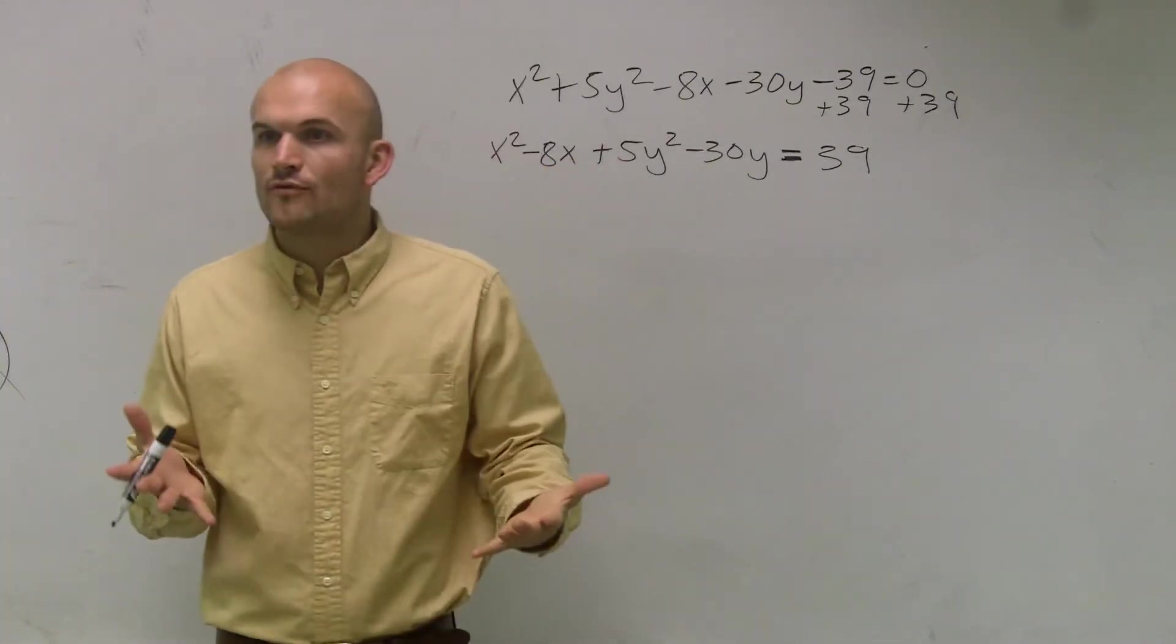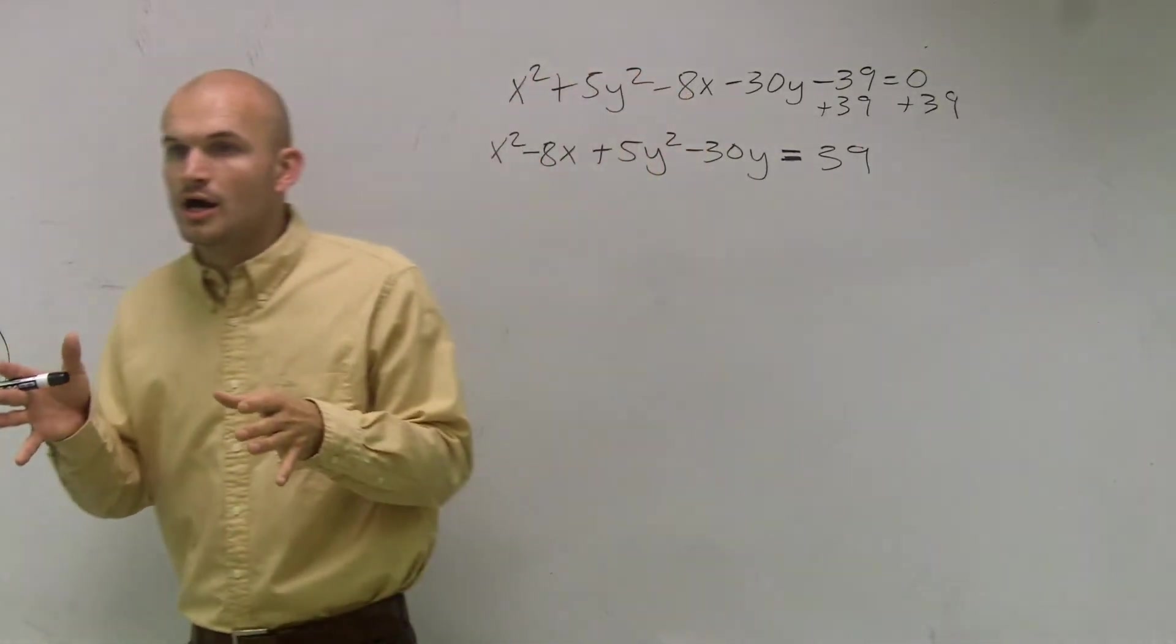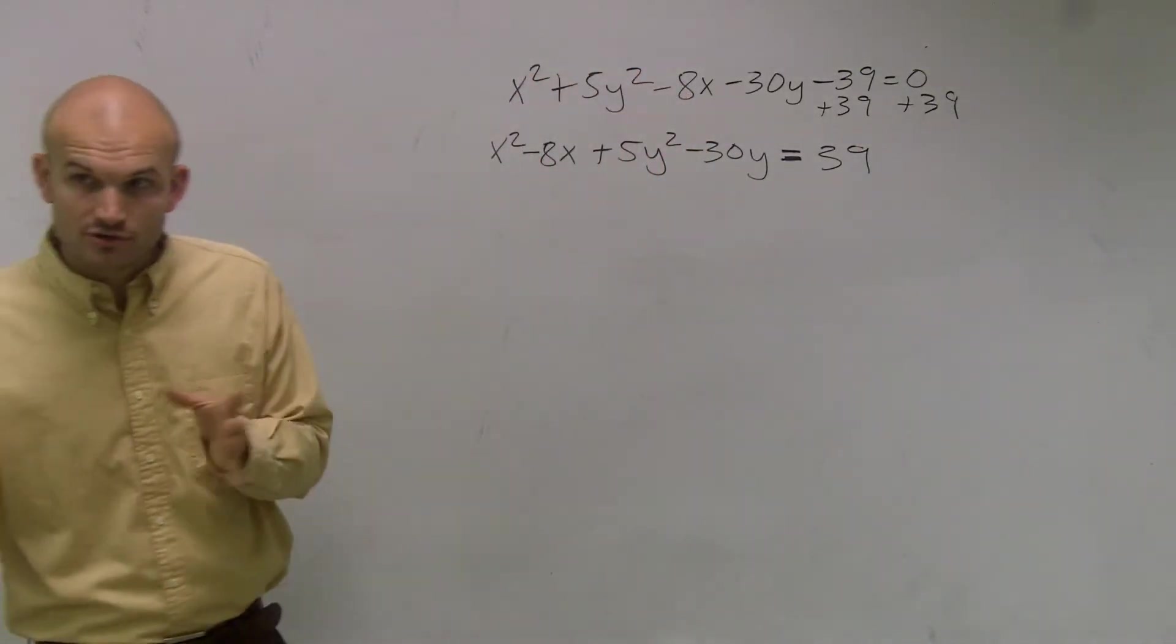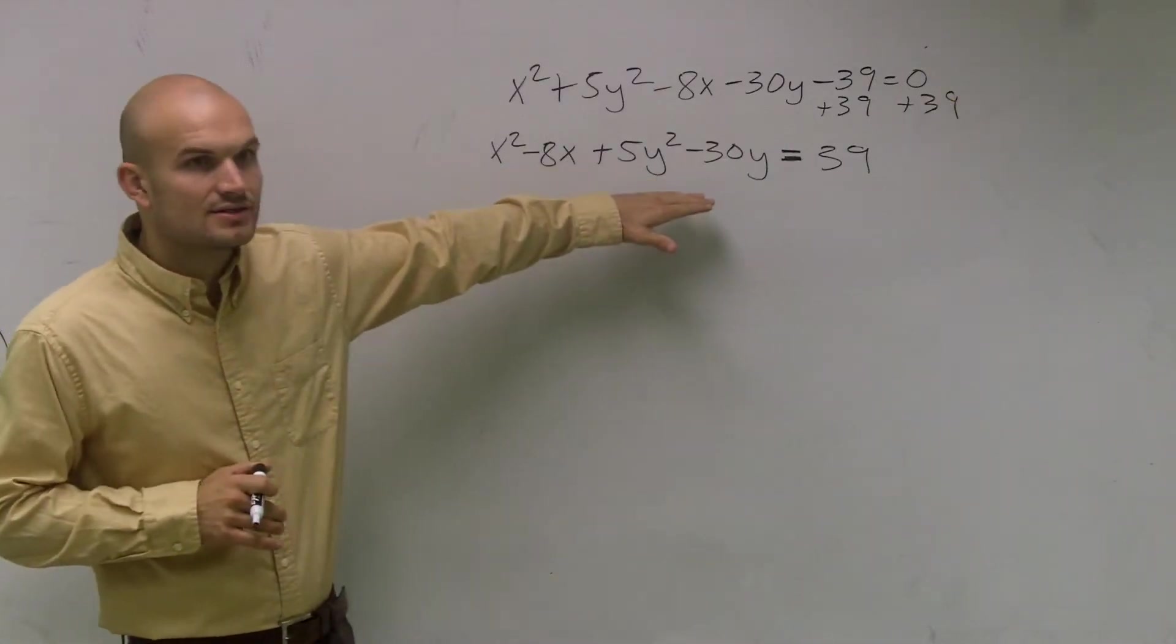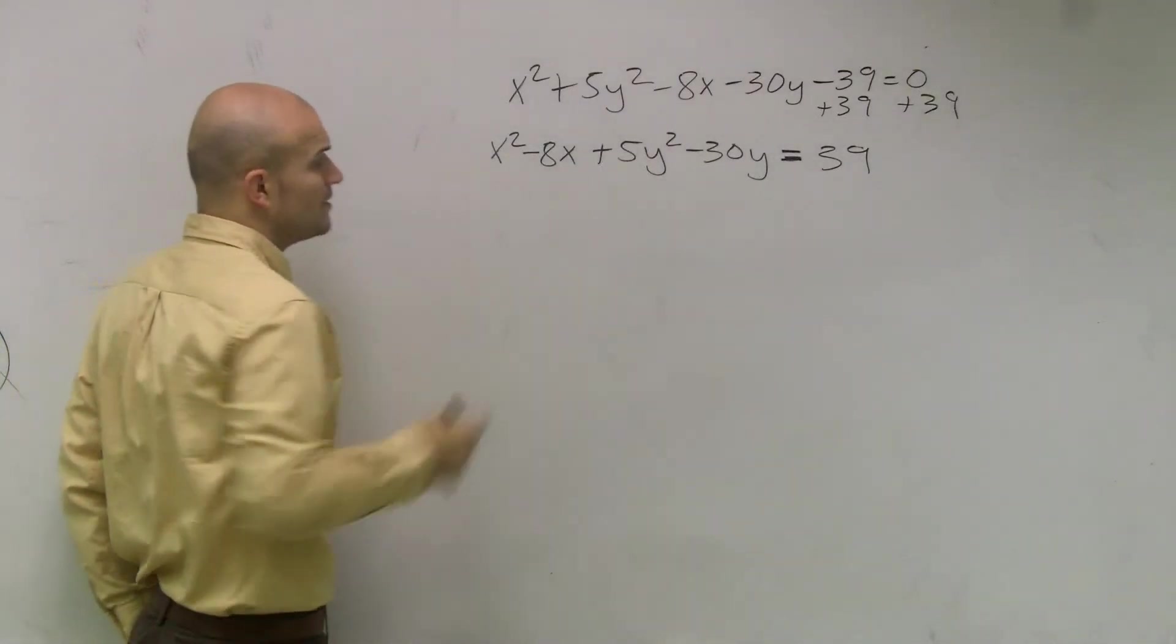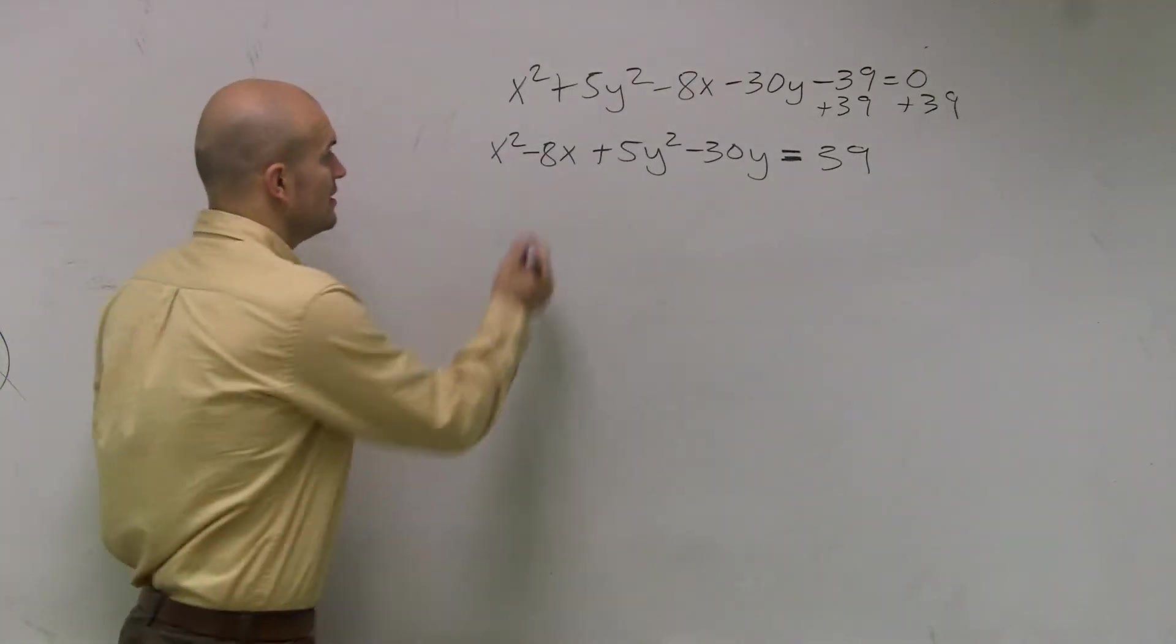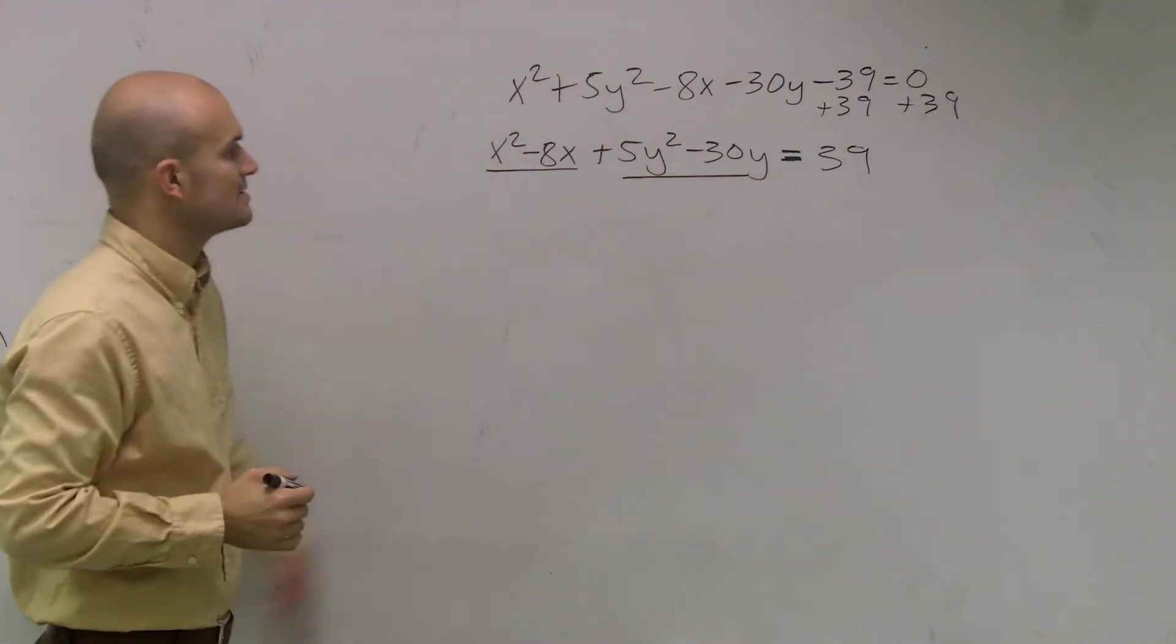But the next thing is I need to have it in standard form. Remember, our standard form is our x minus h squared, our y minus k squared as well. So I need to get these to be perfect squares. So the only way we learn how to do that is to complete the square. So I'm going to have to complete the square for the x's and complete the square for the y's.